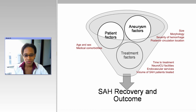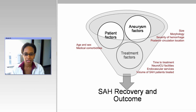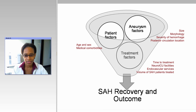Treatment factors are also involved: how long it takes to treat an aneurysm, what facilities are available, whether or not there is a neuro intensive care unit available, and what specific levels of expertise are there — so are there doctors that know how to coil an aneurysm, or are there only doctors that know how to clip aneurysms in the facility. And then how many patients the facility sees on an annual basis, because frankly, practice makes perfect.